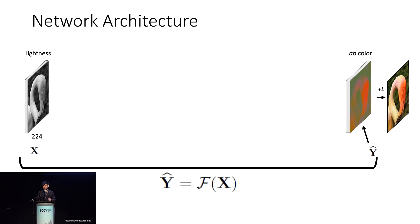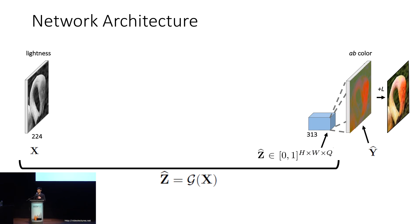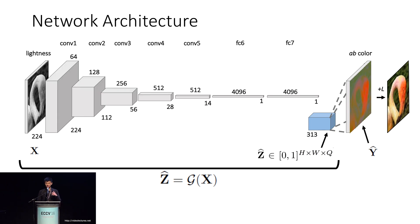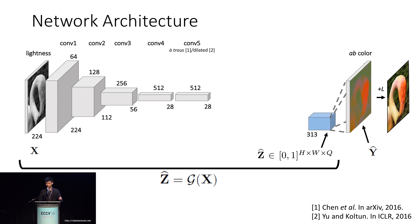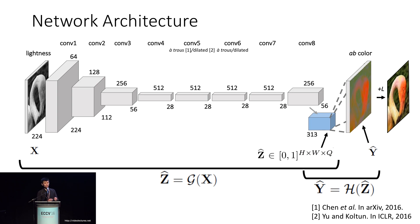How do we map from an input lightness image into an output color? We've converted this problem into one where we predict a probability distribution for every pixel, and we can draw on insights and advances in the semantic segmentation literature. We start with a VGG network trained from scratch — just the architecture. We remove the FC layers, add some additional spatial resolution in the bottleneck using dilated convolutions, add some additional convolutional layers on top, and map the features into a predicted distribution for every pixel. To go from the predicted distribution to a single point estimate, we take an interpolation between the mean and the mode, allowing us to keep output color vibrancy while maintaining spatial consistency.